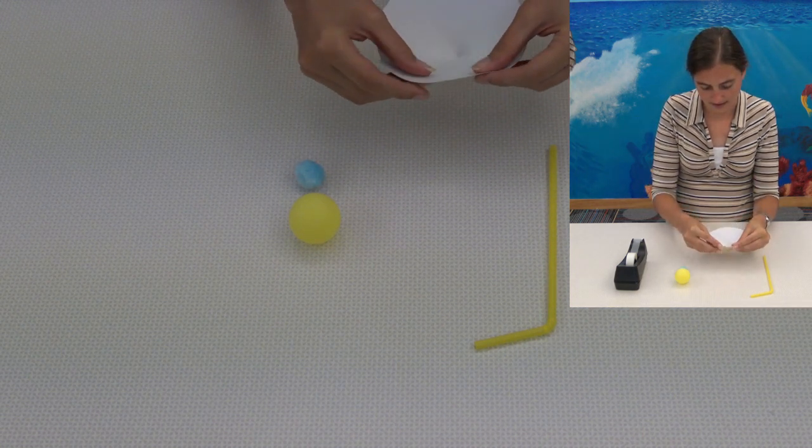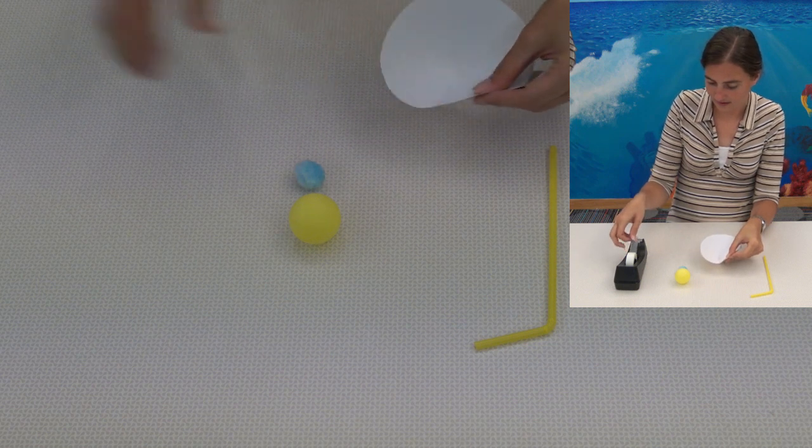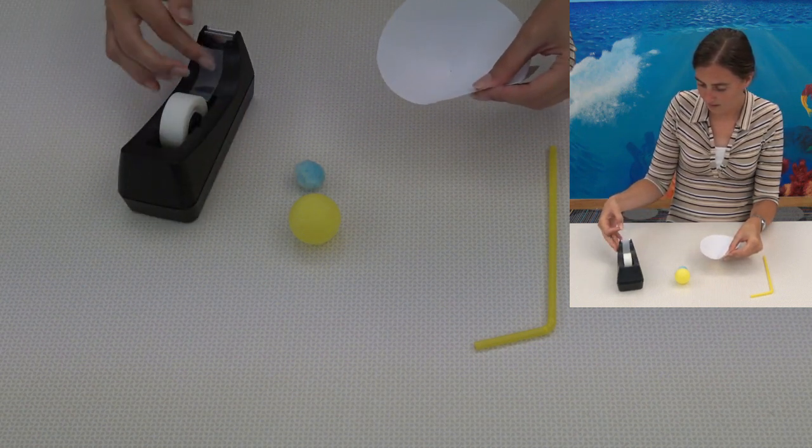Fold the paper over to make a cone shape and tape it together, both on the inside and outside to secure its shape.